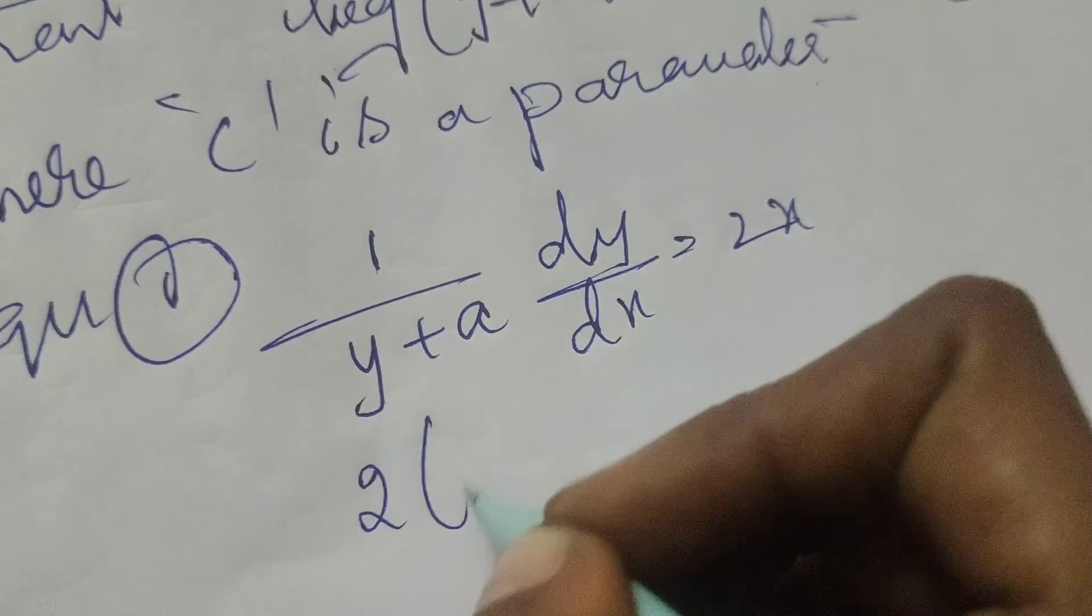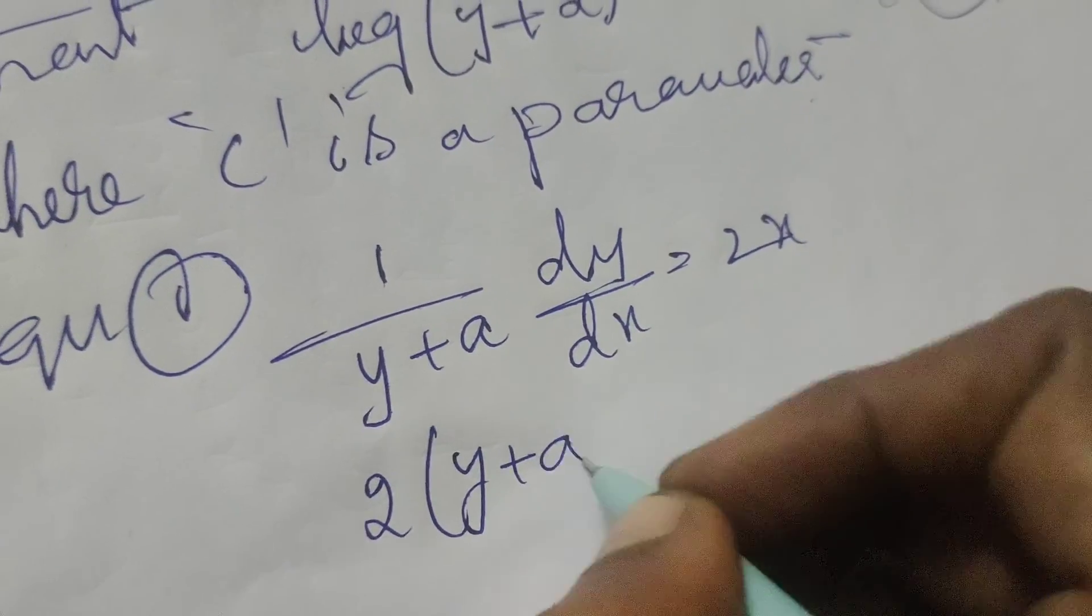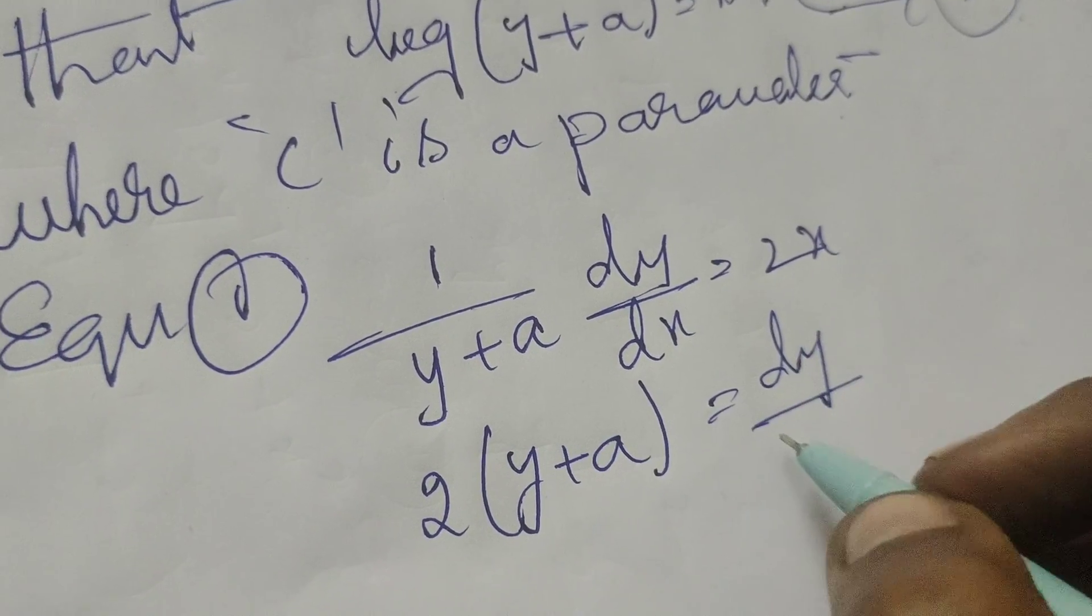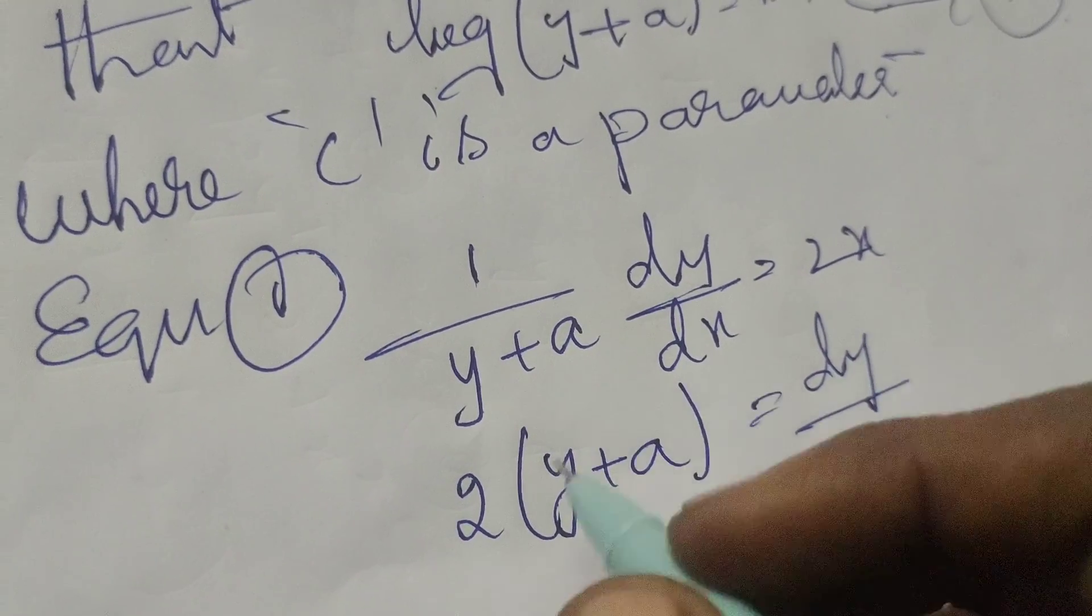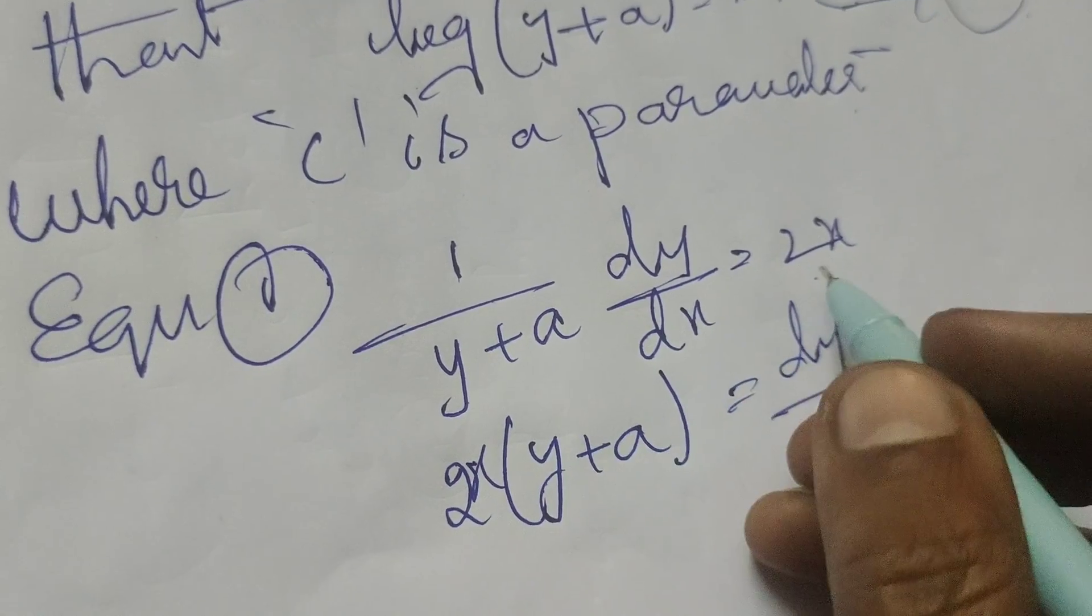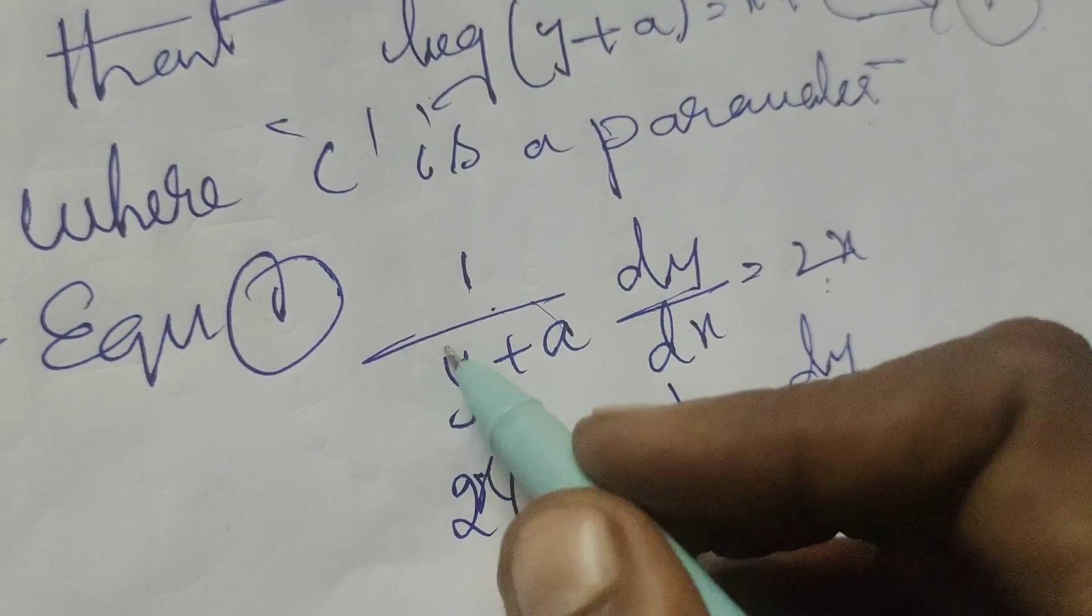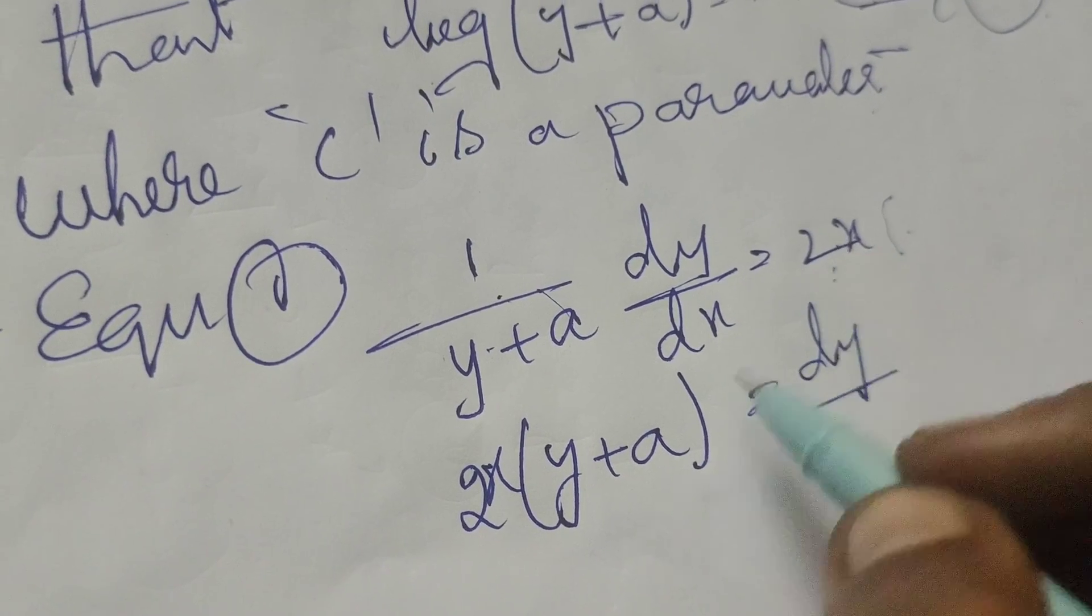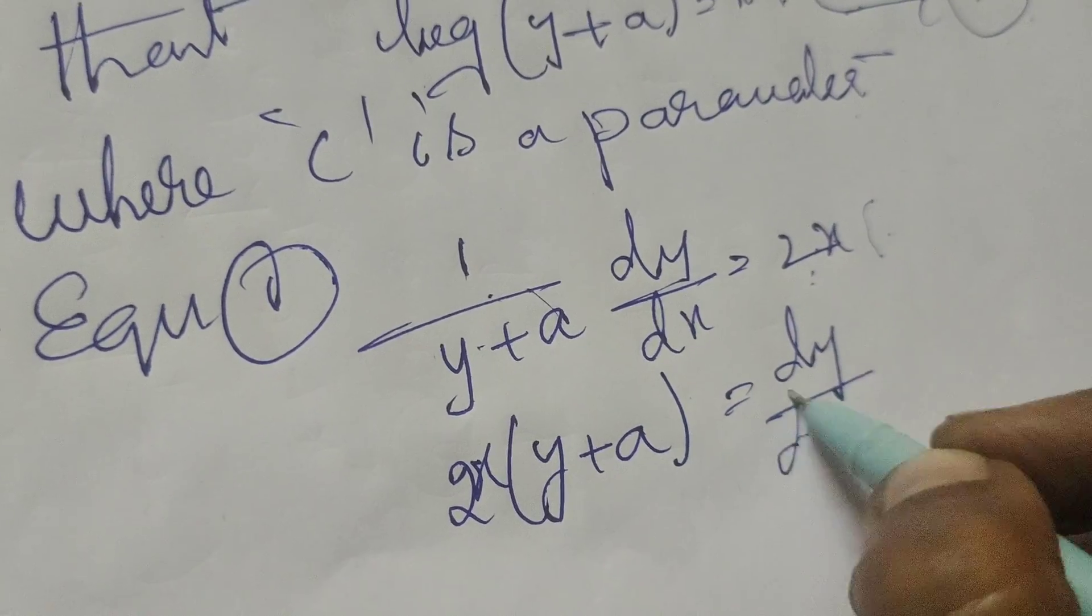Multiplying both sides by (y+a): 2x times (y+a) equals dy/dx. The denominator (y+a) multiplies across.